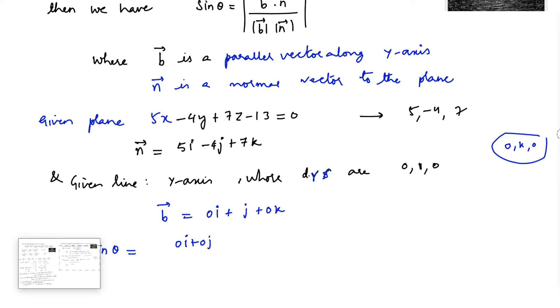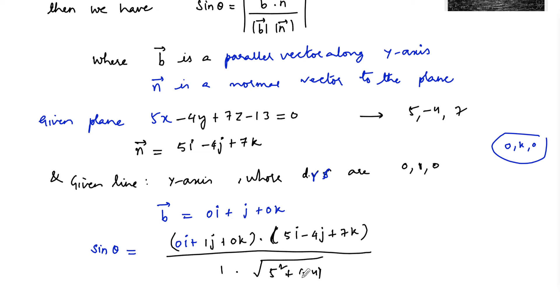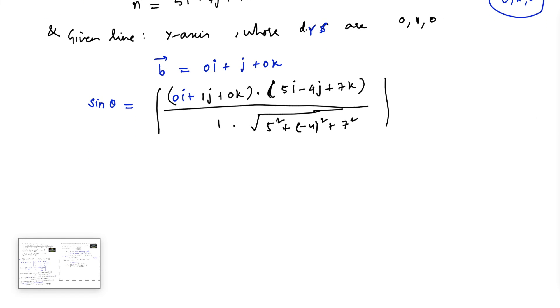Sin theta equals b dot n, which is 0i + j + 0k dot 5i - 4j + 7k, divided by mod b is 1 and mod n is root of 5 squared plus minus 4 whole squared plus 7 squared.